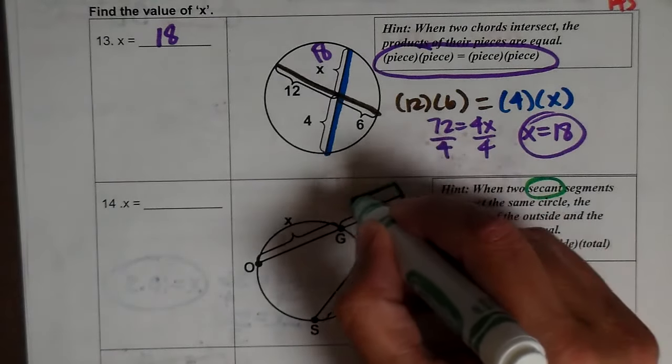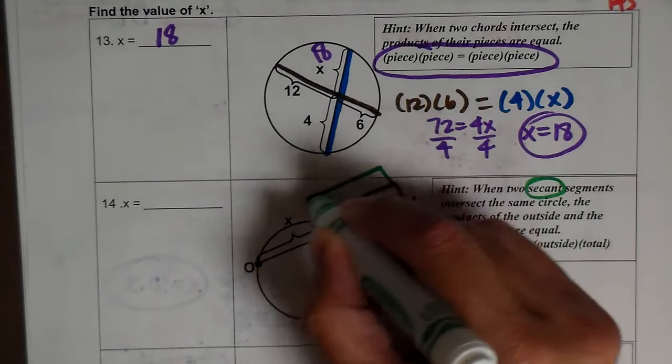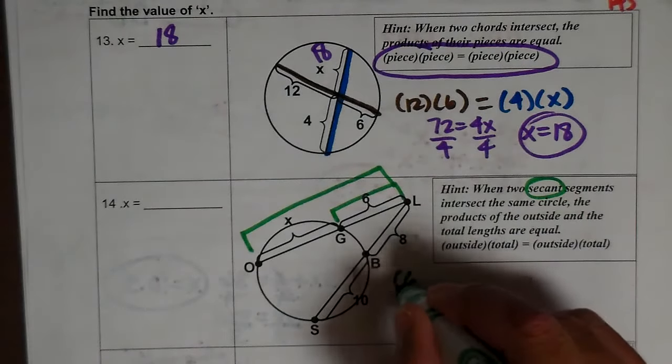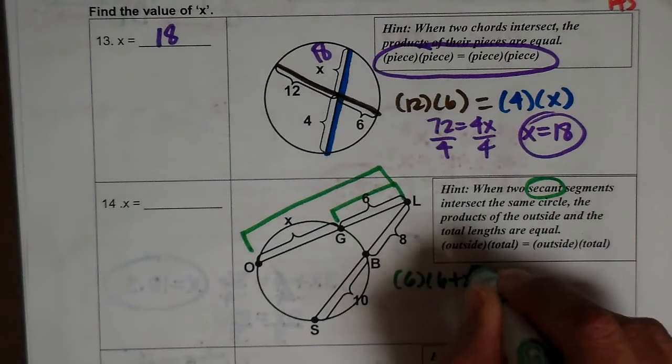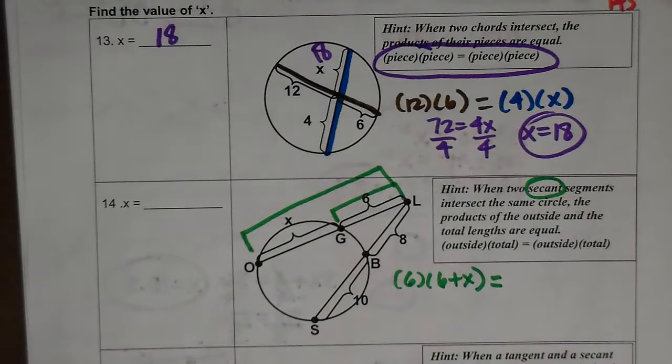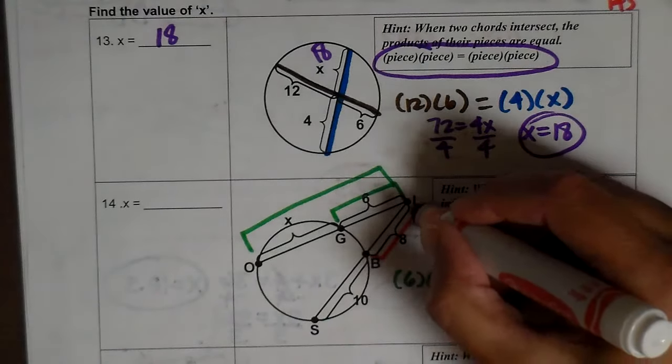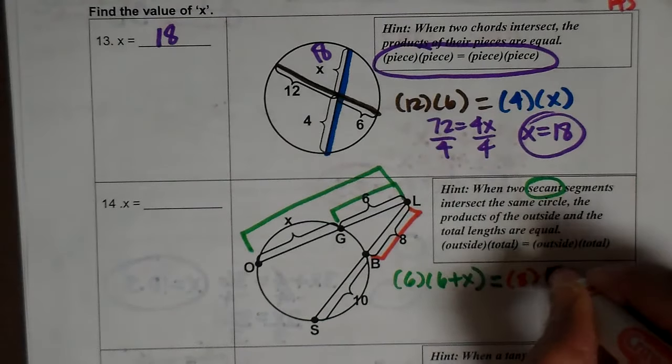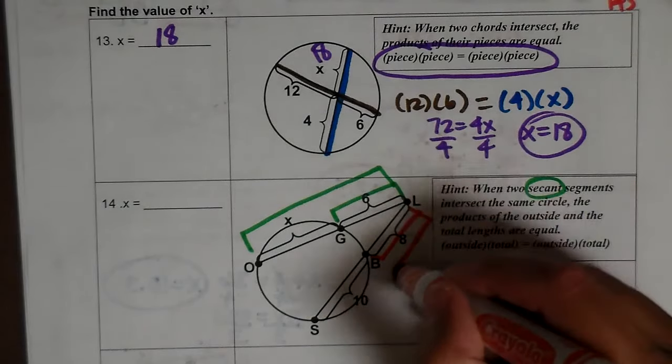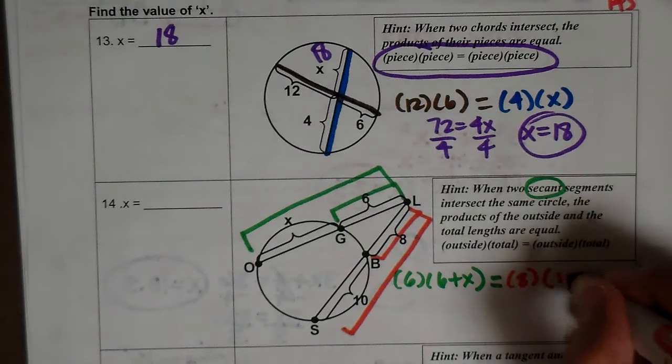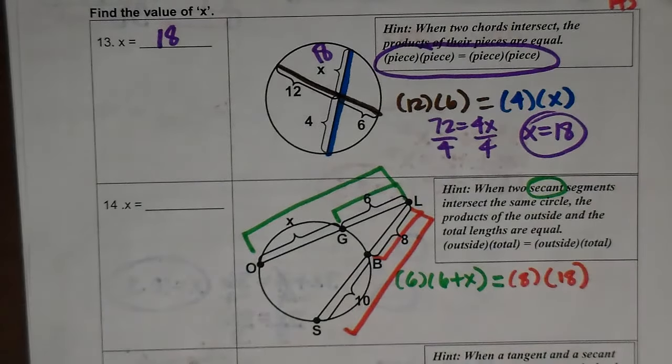So 6 times 6 plus x is going to equal 8 times 8 plus 10, which is 18. So now I'm going to solve this one.